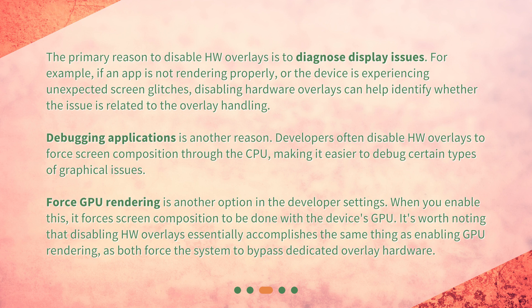Forced GPU rendering is another option in the developer settings. When you enable this, it forces screen composition to be done with the device's GPU. It's worth noting that disabling HW overlays essentially accomplishes the same thing as enabling GPU rendering, as both force the system to bypass dedicated overlay hardware.